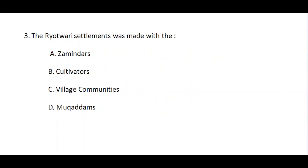Question number three: The Ratwari settlement was made with — option A: zamindars, option B: cultivators, option C: village communities, option D: Mughdams. The correct answer is option B — cultivators.